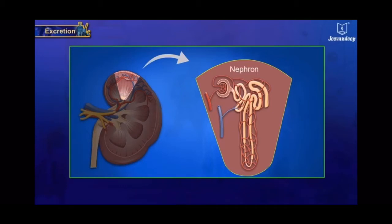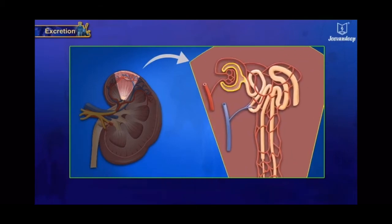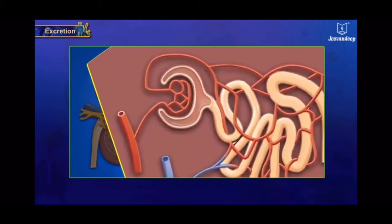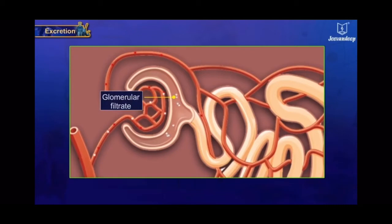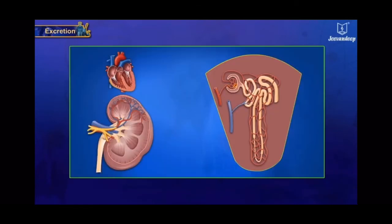Kidneys filter about 190 liters of filtrate a day and produce 1 to 1.9 liters of urine a day. The basic structural and functional unit of a kidney is a nephron. Each nephron, towards its upper end, consists of a cup-shaped structure called Bowman's capsule, containing a bundle of blood capillaries called the glomerulus. The thin inner lining of Bowman's capsule and thin walls of the blood capillaries of the glomerulus allow a large portion of the blood, except big molecules like proteins and RBCs, to get filtered into the Bowman's capsule. This process is called glomerular filtration. The blood, now free from these waste materials, is taken to the heart through the renal vein.